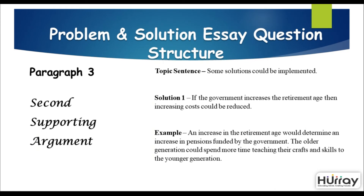In the third paragraph, continue with the second supporting argument covering solutions. The topic sentence could be: 'Some solutions could be implemented.' Solution one: 'If the government increases the retirement age, then increasing costs could be reduced.' For example, an increase in the retirement age would reduce pensions funded by the government, and the older generation could spend more time teaching their crafts and skills to the younger generation.